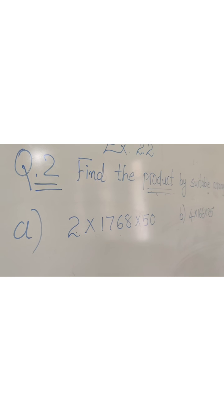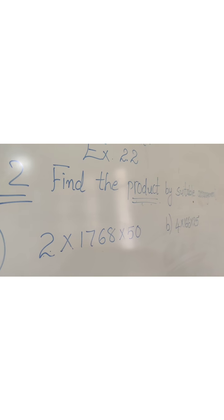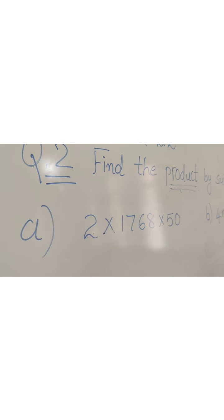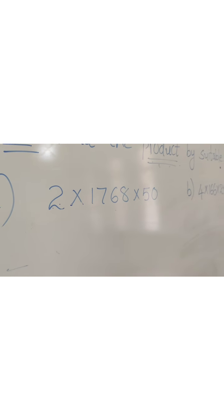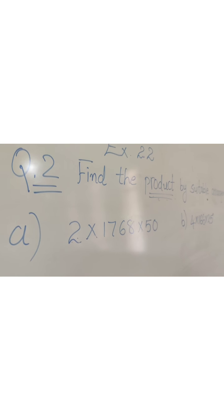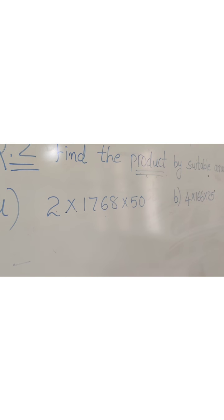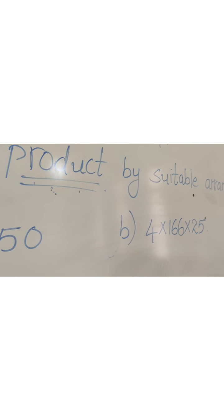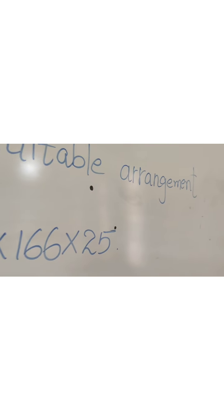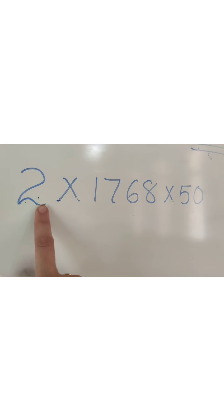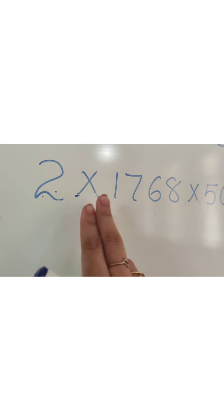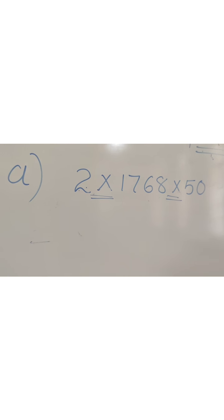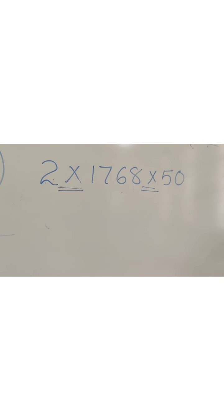Now let's begin with question 2 of exercise 2.2: Find a product by suitable rearrangement. Such a question can be asked for 2 or 3 marks depending on the steps. Here they have asked to find the product — that means the answer of multiplication — by suitable arrangement. They have given 3 numbers with a sign of multiplication between them.